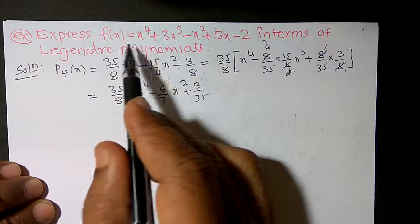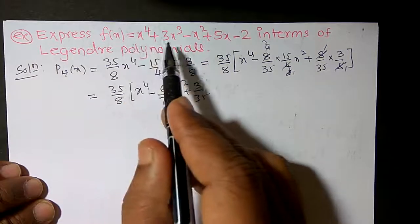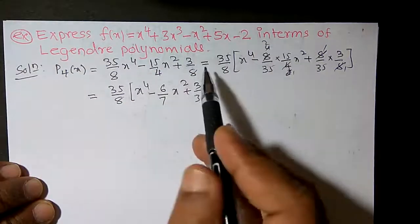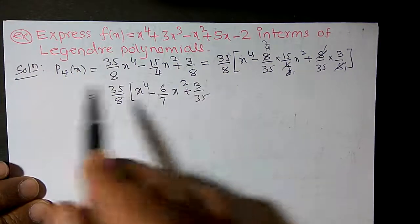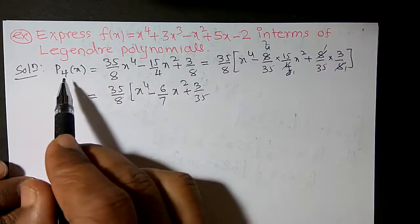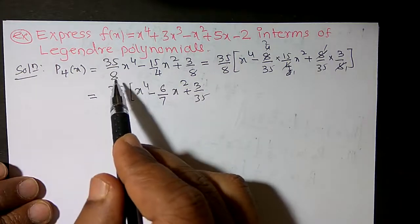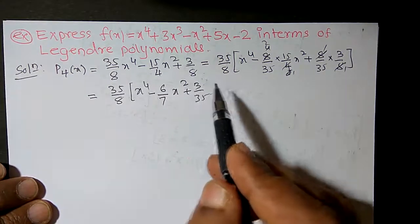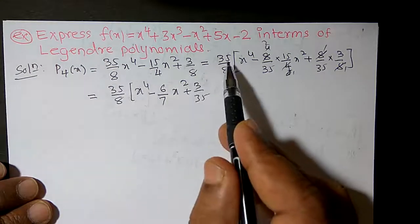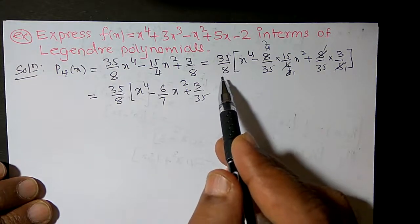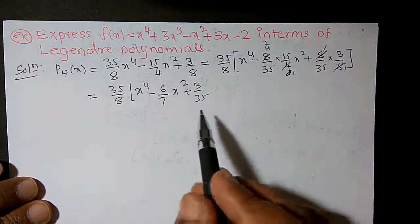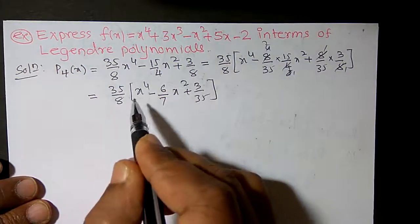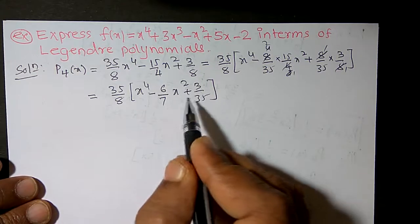It is given that f(x) = x⁴ + 3x³ - x² + 5x - 2. We want to express this in terms of Legendre polynomials. In the last video we obtained P4(x) = (35/8)x⁴ - (15/4)x² + 3/8. So it can be written with 35/8 as common from all the terms, and simplifying we get (35/8)[x⁴ - (6/7)x² + 3/35].